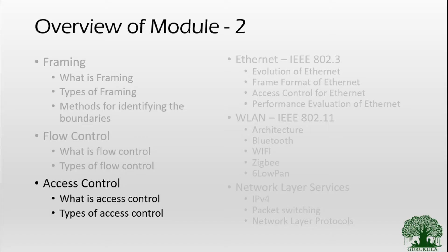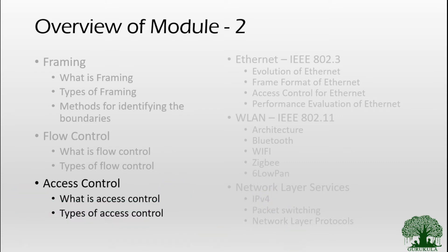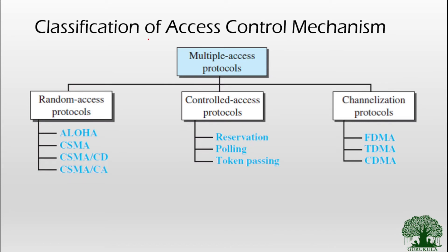In our previous videos, we were talking about the access control mechanisms incorporated in the data link layer of the OSI model. Out of the various types of access control mechanisms in the data link layer, we are particularly focused on the random access protocol mechanisms. We have already discussed ALOHA and then the CSMA protocol, and today in this video, we will be covering CSMA CD.